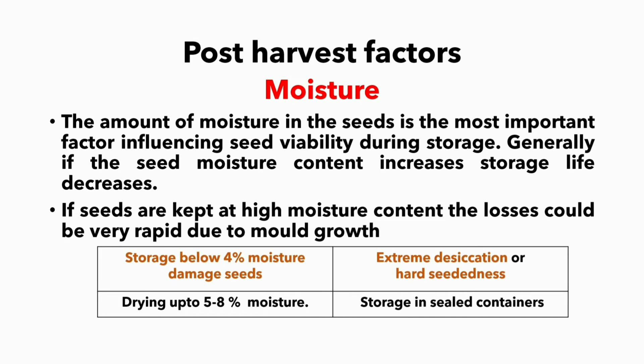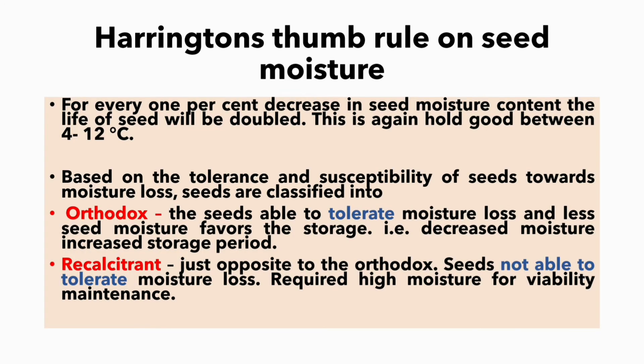Storage below four percent moisture damages seeds and causes extreme desiccation, or 'hot seededness'. Drying up to five to eight percent moisture for storing in sealed containers is recommended. Harrington's thumb rule on seed moisture: for every one percent decrease in seed moisture content, the life of the seed will be doubled. This holds good between 4 to 12 percent moisture.